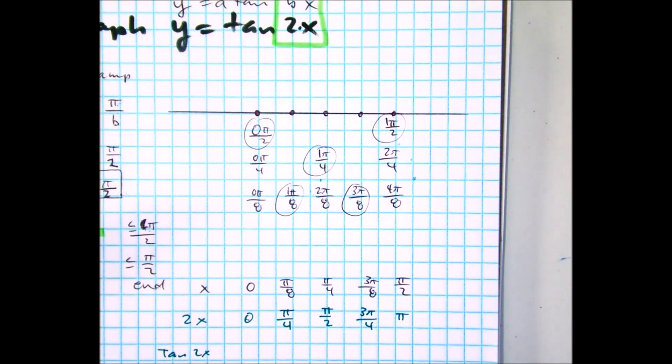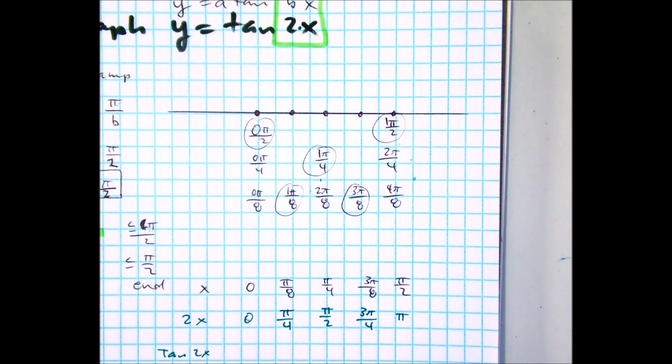I call it the golden row because this is the values that you need for tangent. We spent two weeks graphing sine and cosine. Do you remember how sine starts at 0? It goes to 1, 0, negative 1, and 0. Cosine goes from 1, 0, negative 1, 0. That's the golden row, right? For tangent, it's this.